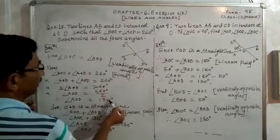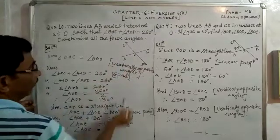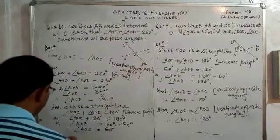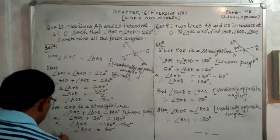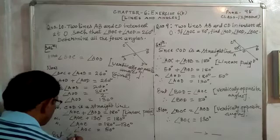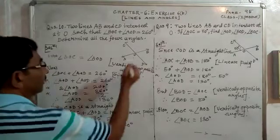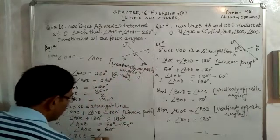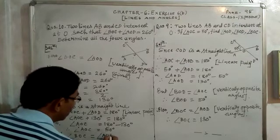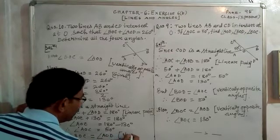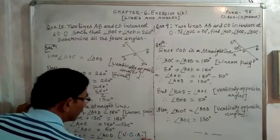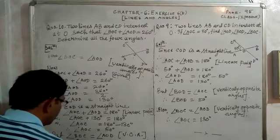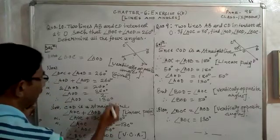Now we need to find angle BOC. Since AB and CD intersect at O, angle BOC and angle AOD are vertically opposite angles, so angle BOC is equal to angle AOD, which is 130 degrees. We write: angle BOC is equal to angle AOD, equal to 130 degrees, because they are vertically opposite angles.